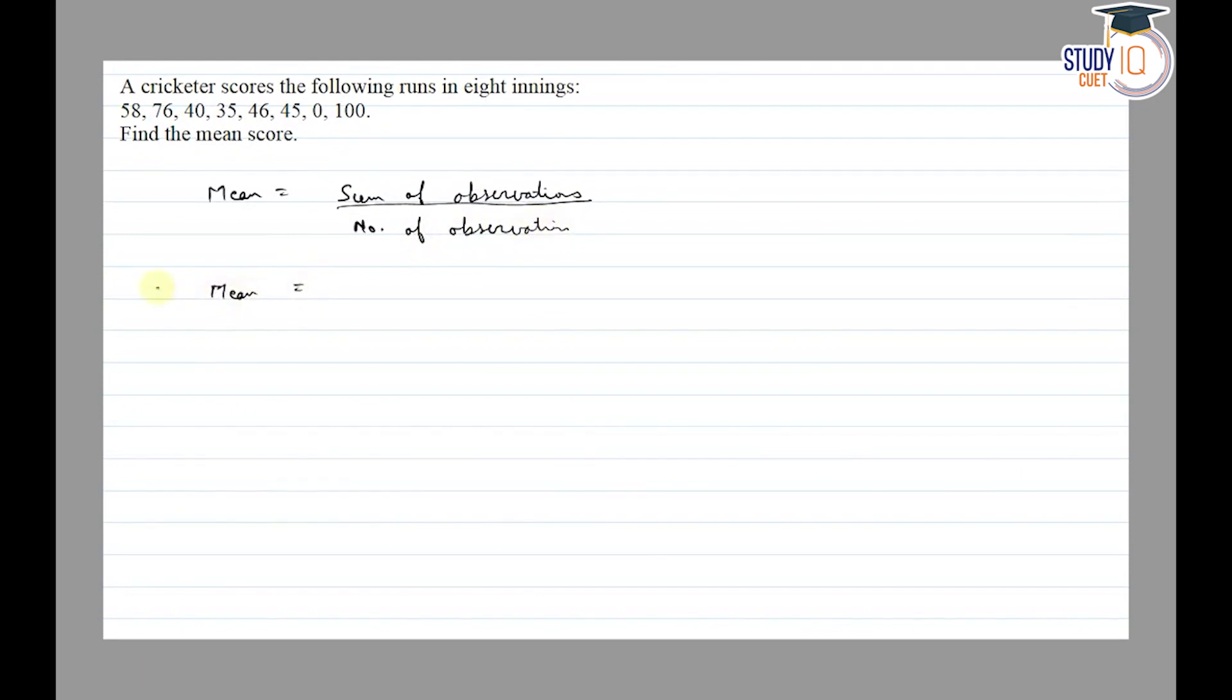So mean is sum of observations. The observations we have here are the scores, so we have to sum 58 plus 76 plus 40 plus 35 plus 46 plus 45 plus 0 plus 100.